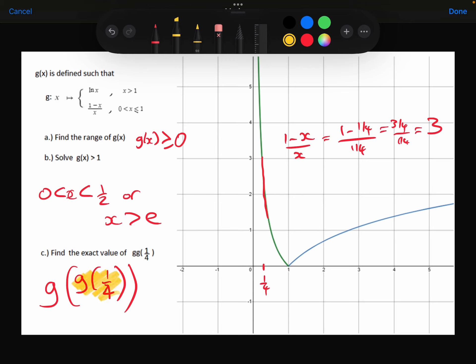So this is 3. Now I need to substitute 3 into the G function, which is over here. Notice now, 3 is greater than 1, so we're substituting it into the logarithm now, and not the 1 minus x over x. So G of 3 is equal to ln of 3, and that is the exact value of G, G of a quarter.